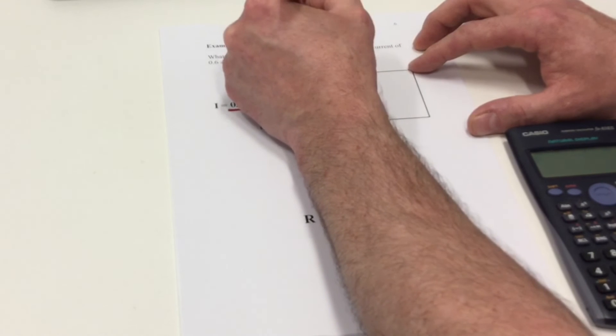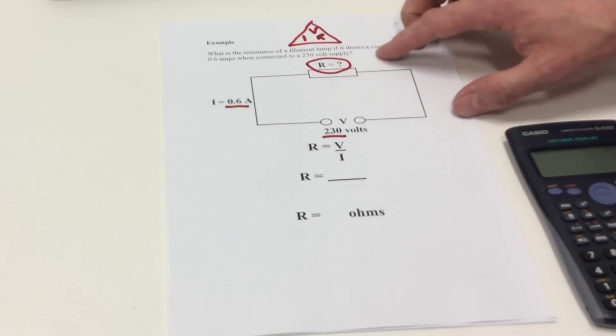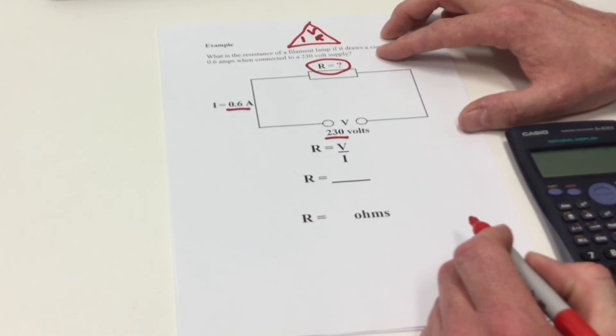Again, we could use the triangle V, I, R. Cover over R for resistance and see it's voltage divided by current. So resistance is equal to voltage divided by current.